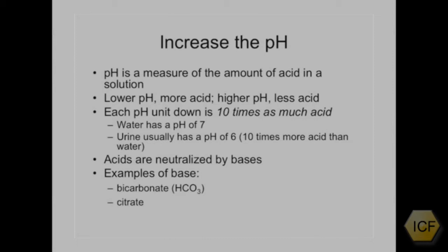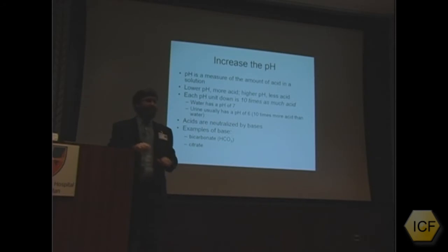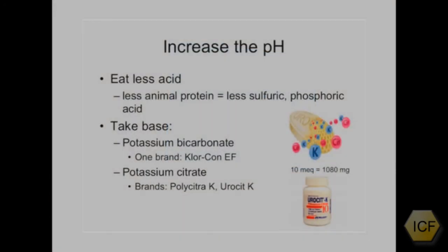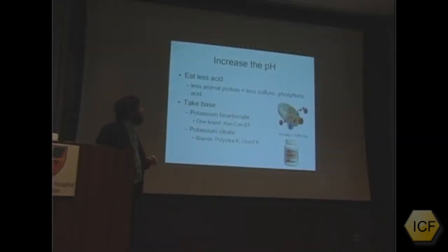Acids are neutralized by bases. If you want the urine to be less acid, you have to provide a base. The base we're usually talking about is bicarbonate, and the way to get bicarbonate into the urine is usually to take citrate. You can also eat less acid — in a normal diet, it's animal protein that provides sulfuric acid and some phosphoric acid. If you eat less protein, you generate less acid, making it easier to alkalinize the urine.